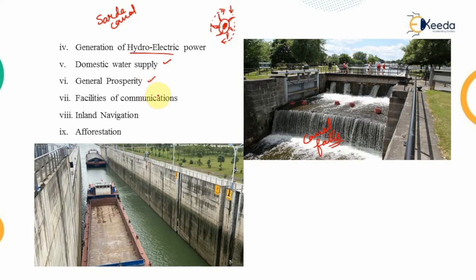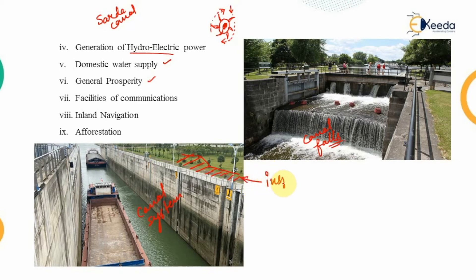Another advantage is the facilities of communication. Whenever you come across a canal system, you will observe that there is an inspection route on both banks of the canal, provided for maintenance visits. That inspection route on the sidelines of the canal system is further used by different modes of communication. As you can observe, the canal system is also used for inland navigation — through the water you can navigate — and this is one of the advantages of the irrigation system.